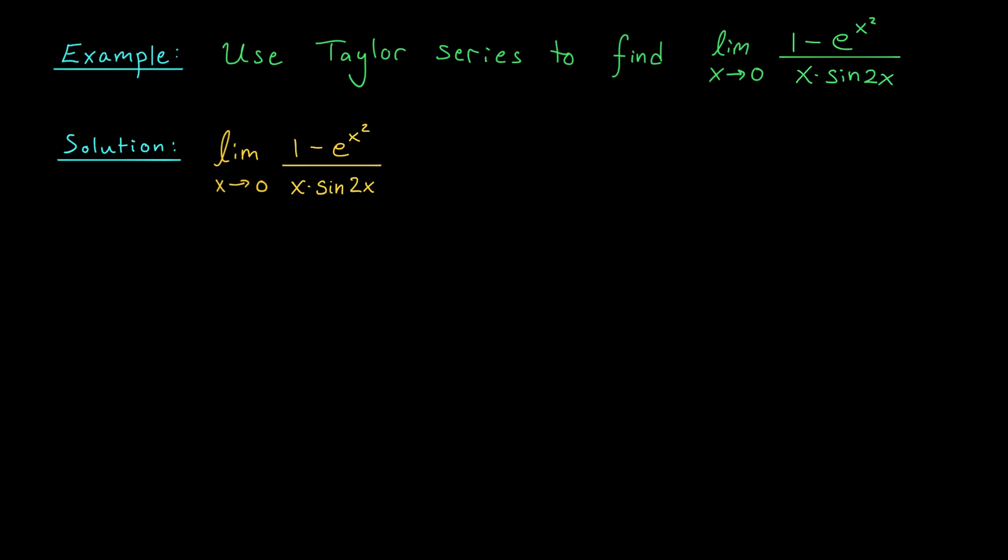I have the limit as x goes to zero and in the numerator, I have one minus... I need the Maclaurin series for e to the x squared. Well, this should be the same as the Maclaurin series for e to the x, except I'm going to replace all my x's with x squareds. So I have one plus x squared. And after this point, the terms are of order x to the four as x goes to zero. So I'm just going to write big O of x to the four. Hopefully, this will be enough terms. In the denominator, I have x times the Maclaurin series for sine two x. This will look like the Maclaurin series for sine x, except we're going to replace x with two x. Now, I'm not exactly sure how many terms I'm going to need. So I'm just going to be really lazy and take only the first term. The first term is going to be two x. And then after this point, all the terms are of order x cubed as x goes to zero. So I'm going to write big O of x cubed. You usually don't need to write too many terms. So hopefully, this will be enough.